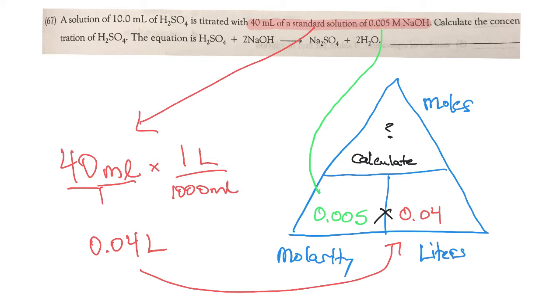I highlighted what is given because we don't know the concentration of the acid, the H2SO4. We know we have 10 milliliters of the acid, we just don't know what the concentration is. But we have been given the volume and the molarity of the sodium hydroxide, NaOH.